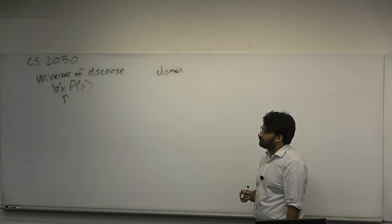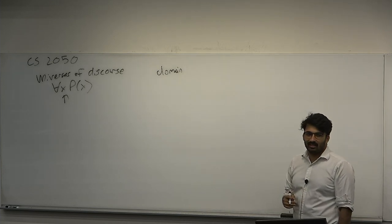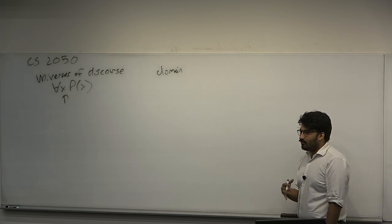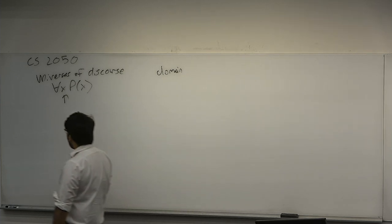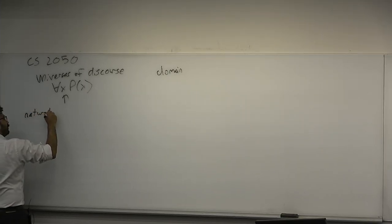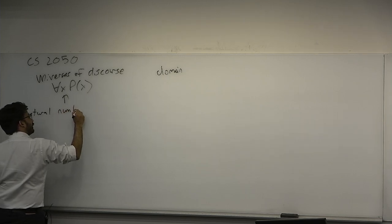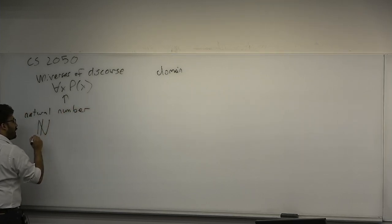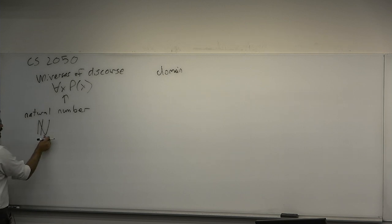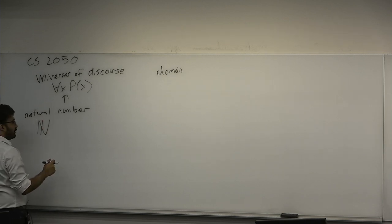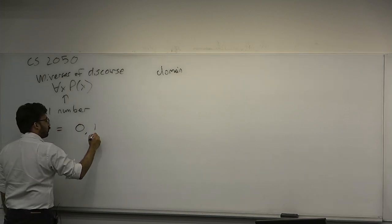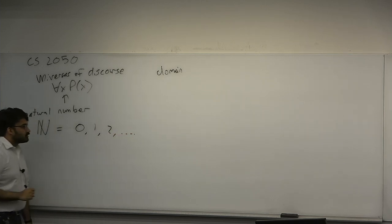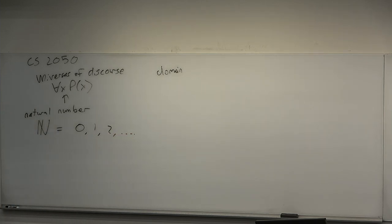We won't get to fully define what these are yet because we need to talk about set theory, which comes next week. But vaguely, a natural number is a number — we use this big N with a strikethrough. N stands for number. This references numbers like 0, 1, 2, and so on. You may think of a natural number as a whole number that's positive or zero.